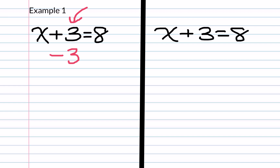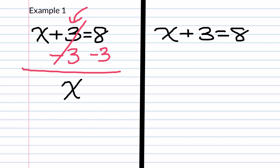Remember, the goal with solving one-step equations is to always get your variable alone. Whatever we do to one side, we must also do to the other. So since we subtracted 3 on the left side, we must also subtract 3 on the right side. We know that 3 minus 3 is 0, so we simply bring down our x and equal sign, and we can see that 8 minus 3 is 5. So our final answer is x equals 5.